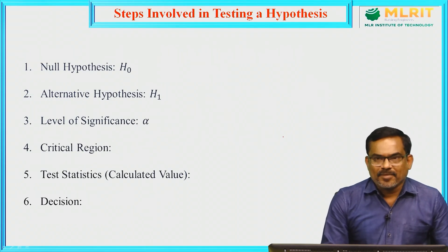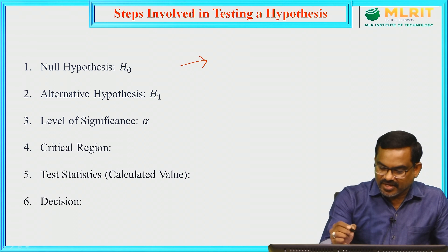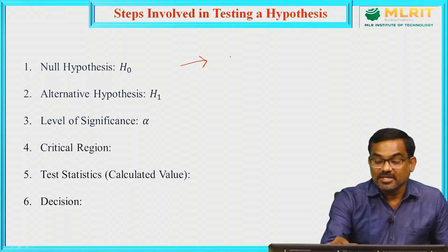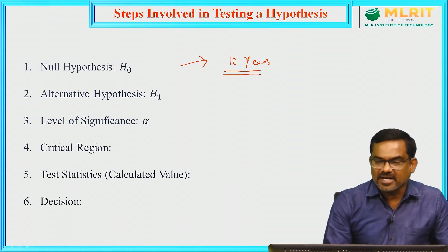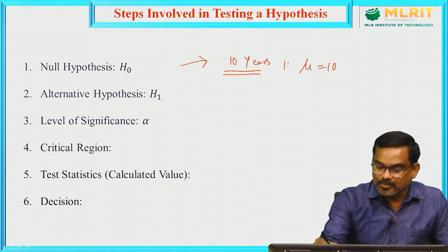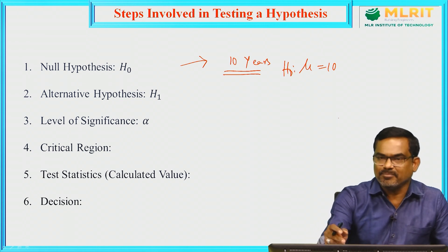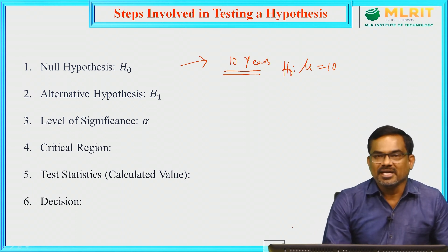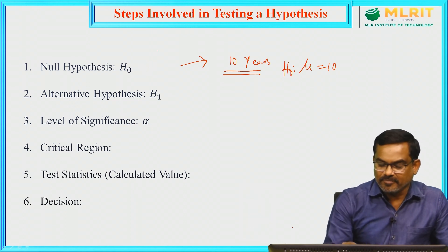Now, coming to the present session — the first topic is the steps involved in testing a hypothesis. For example, a manufacturer of televisions claims that on an average his product works for 10 years. We need to test whether the manufacturer's claim is correct or wrong. So, H naught: mu equal to 10. This is the null hypothesis, which is actually to be tested — we test whether the average lifetime of televisions is 10 years or not. This is step 1 in testing a hypothesis.